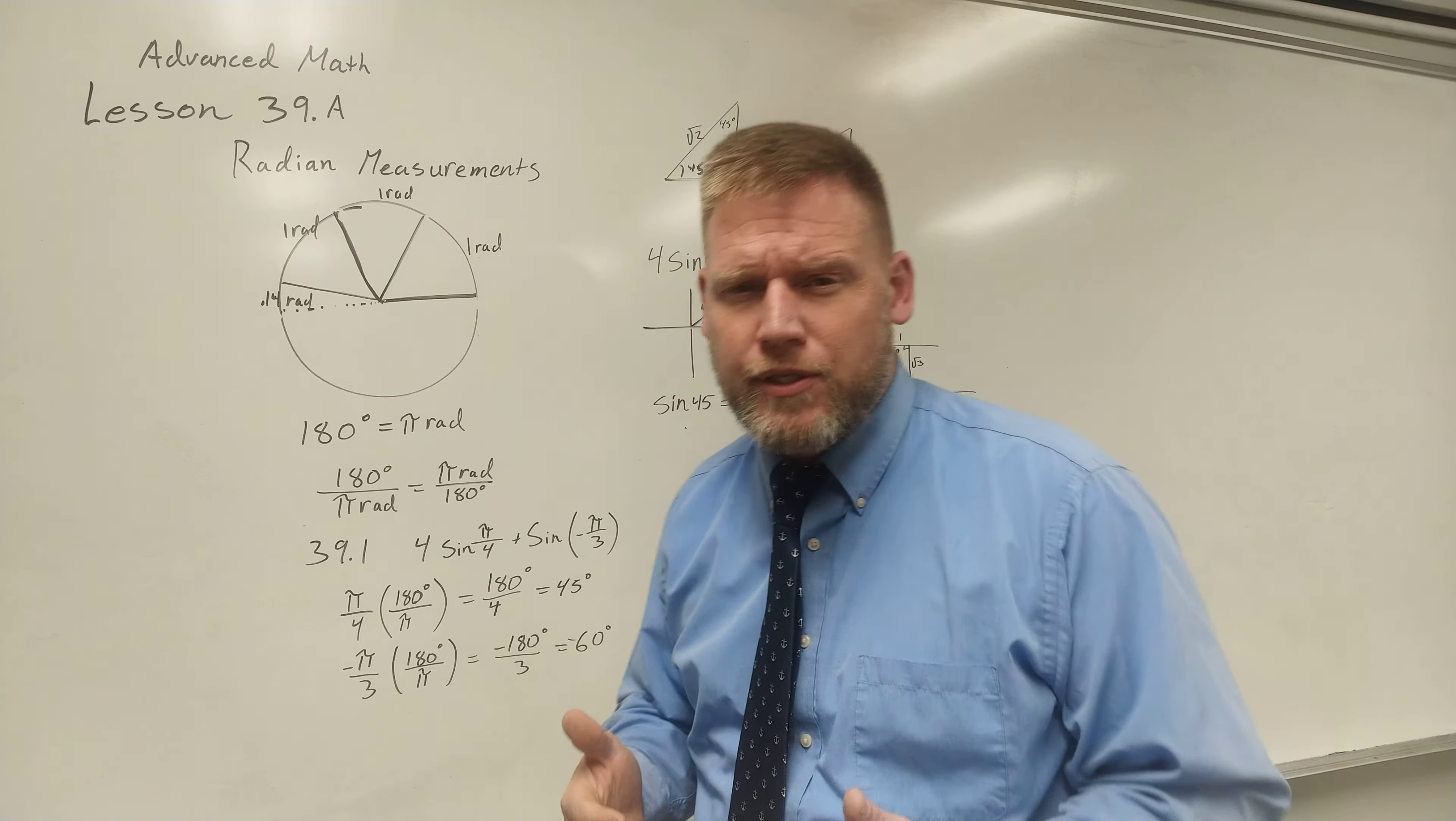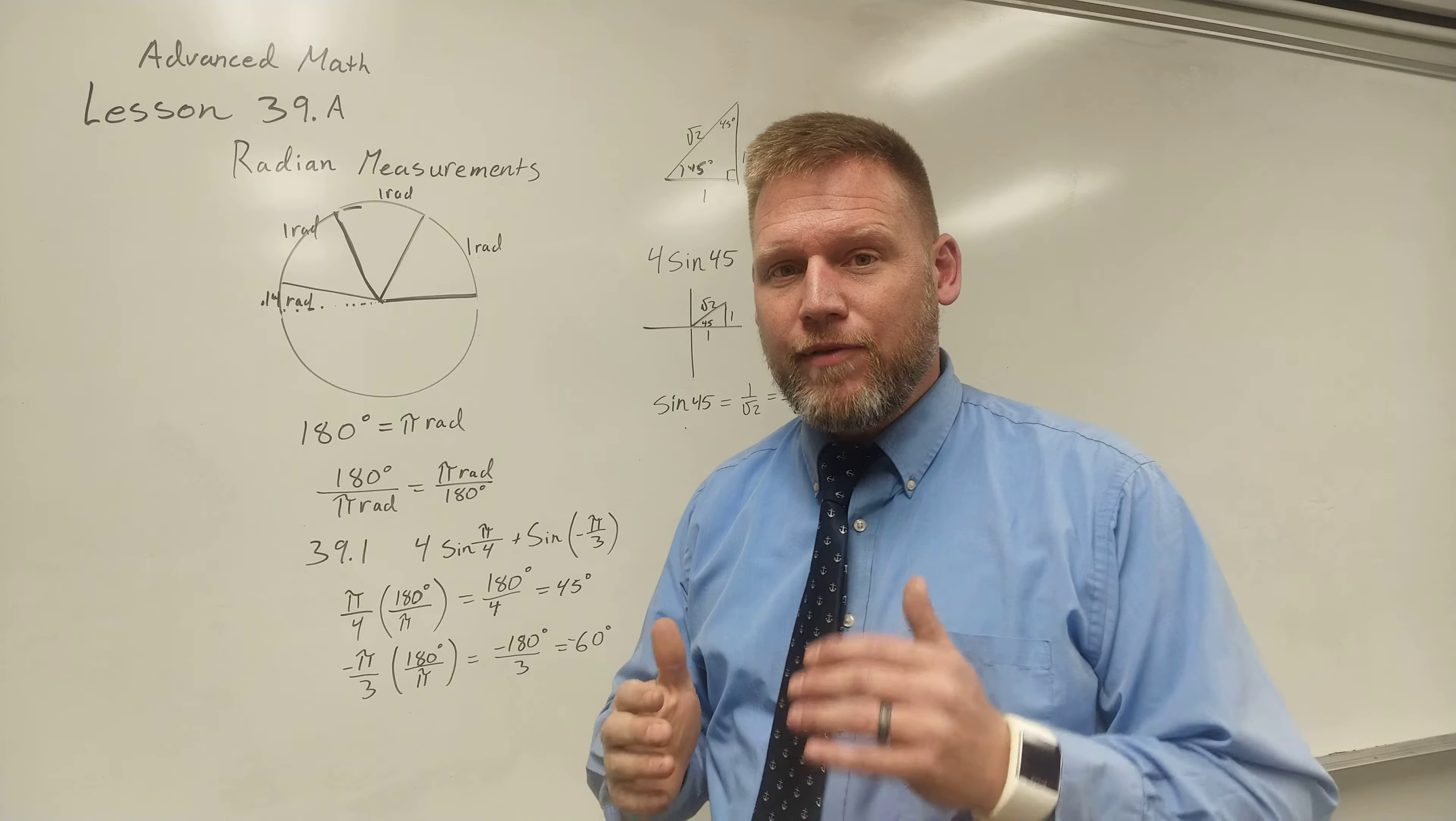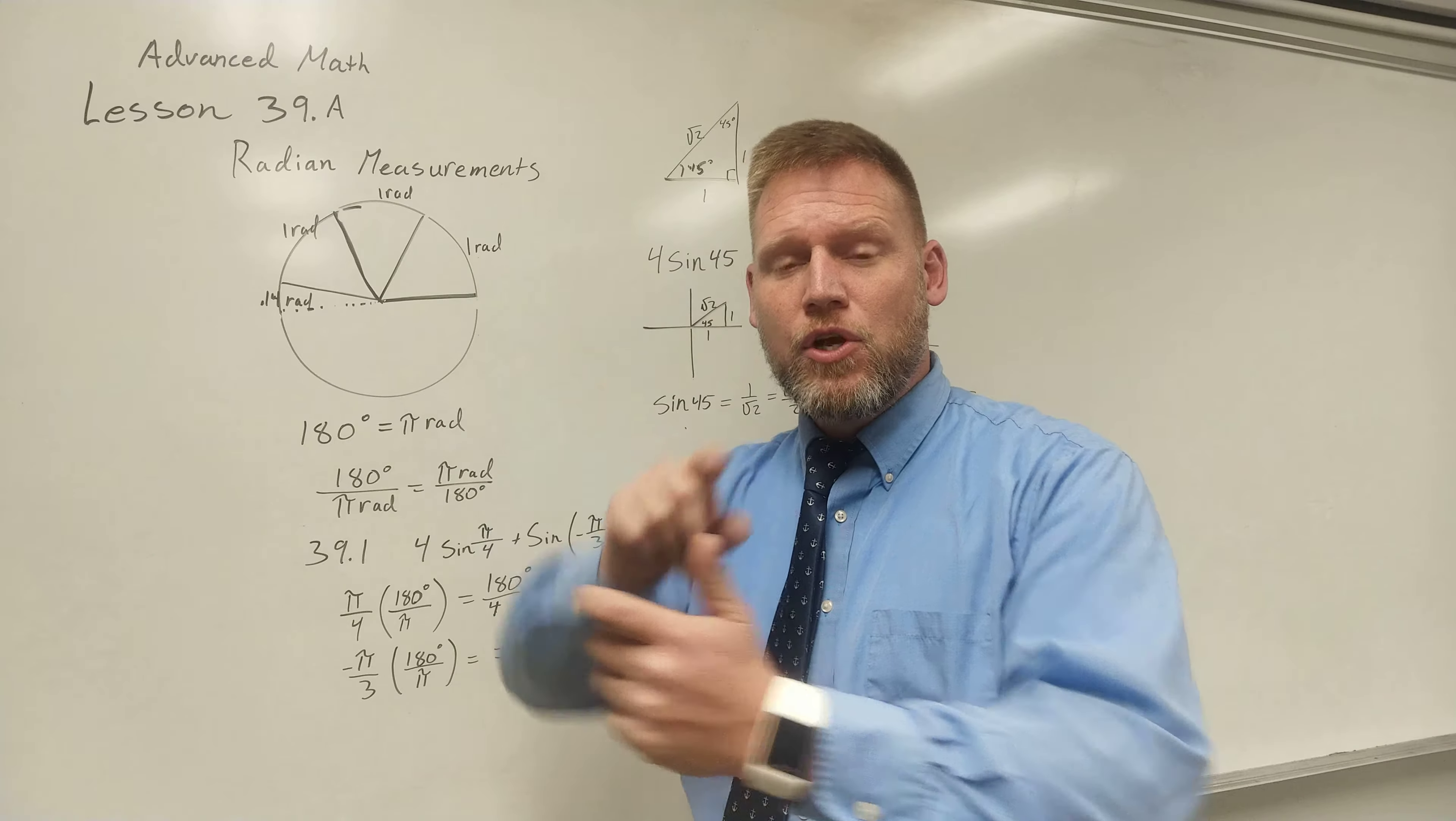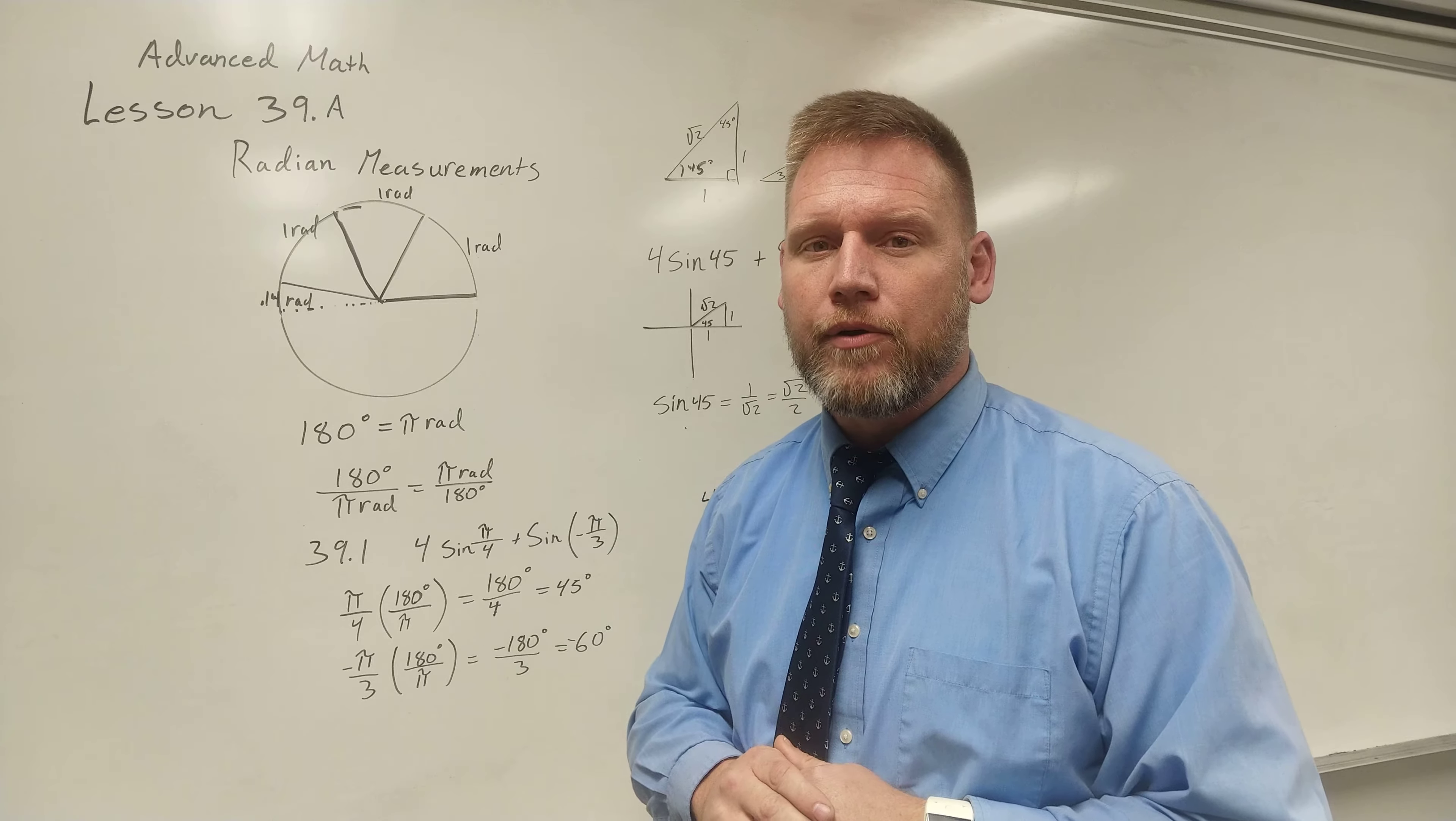Some of the formulas we've already used, for instance, 2πr, circumference of a circle, is dealing with the fact that it's relating to the ratio of what is the radius in relationship to the circumference. Well, it's 2π radiuses to go all the way around.